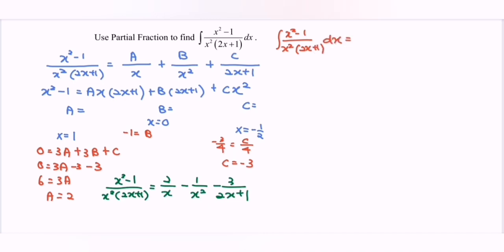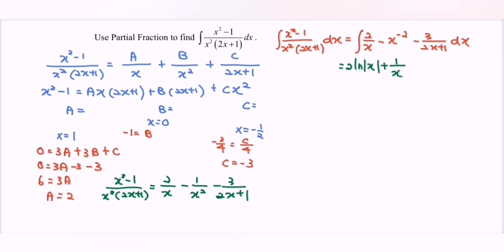This equals — do remember to get ready with the integration. Integrate 2 over x minus x to the power of negative 2 minus 3 over 2x plus 1, with respect to x. Remember to refer to the basic method. Where we have 2 over x, which is the reciprocal, we will have 2 ln x, plus 1 over x, minus 3 ln of bracket 2x plus 1. Do remember to differentiate the internal function 2x plus 1, giving 2 over 2 plus C.